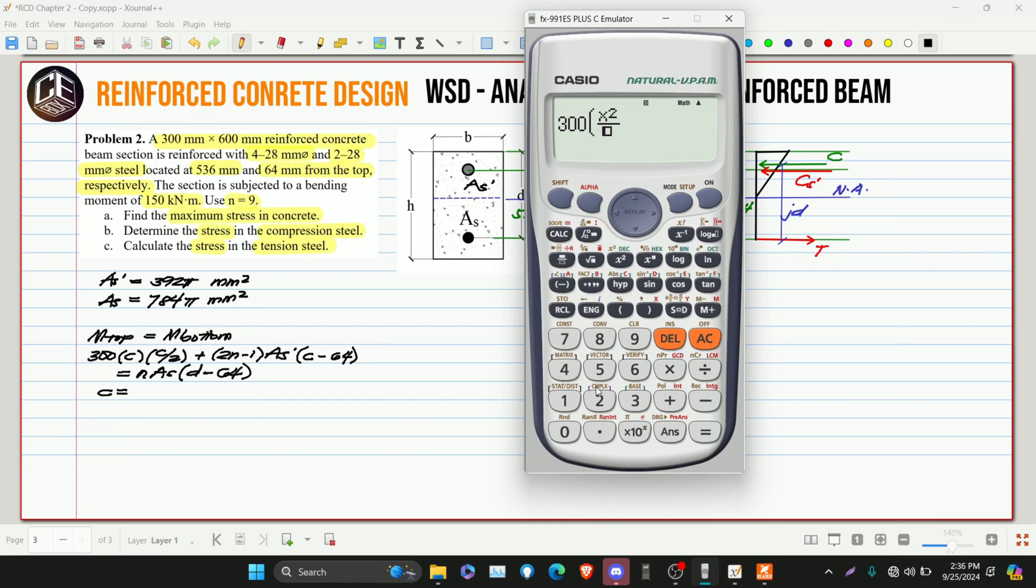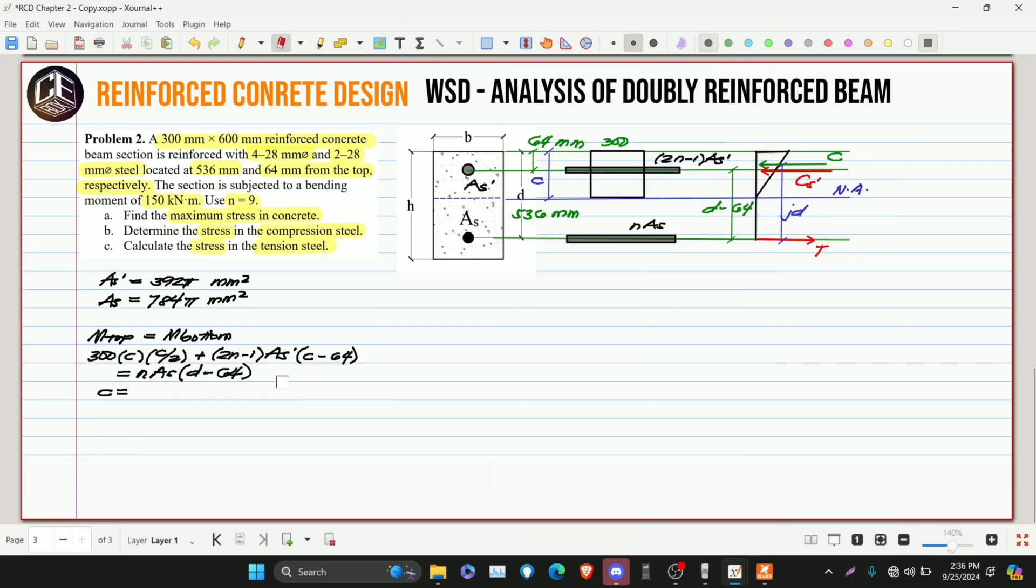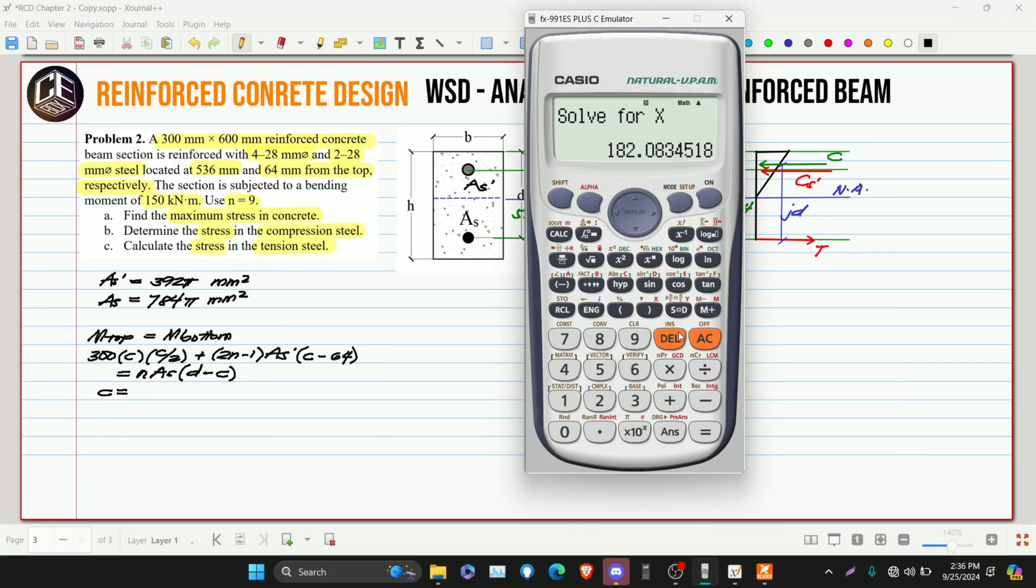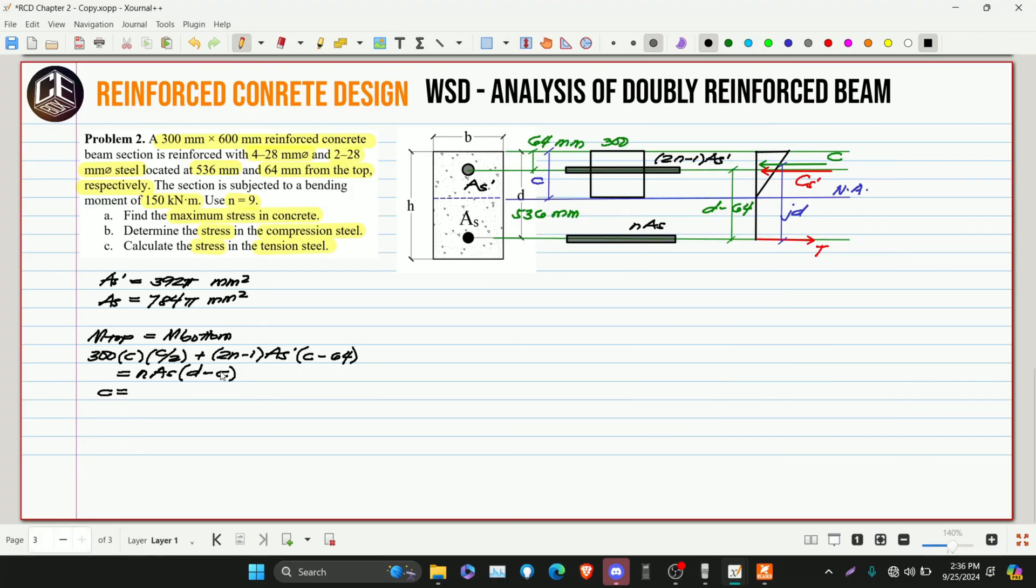300 times C squared over 2, then plus 2 times 9, that is 18 minus 1, which is 17. Remember that. Then AS prime, 17 times 392π multiplied by C minus 64, equivalent to N, that is 9, multiplied by AS, 784π multiplied by D, 536 minus C. So this is our answer for C: 186.15 millimeters.